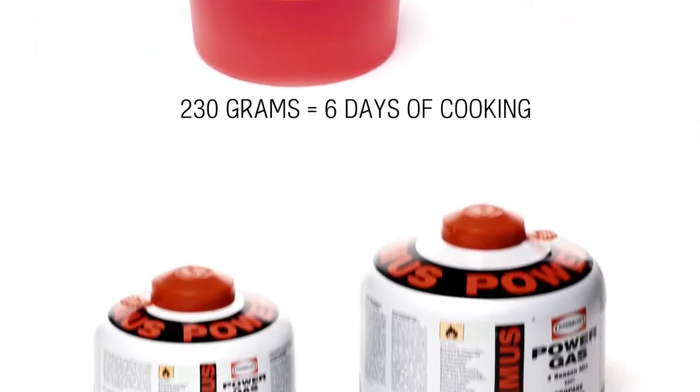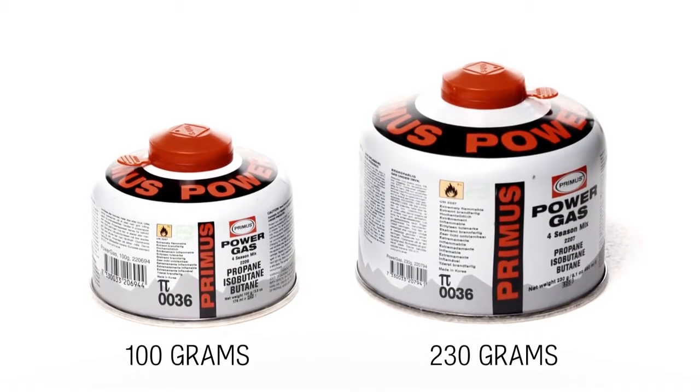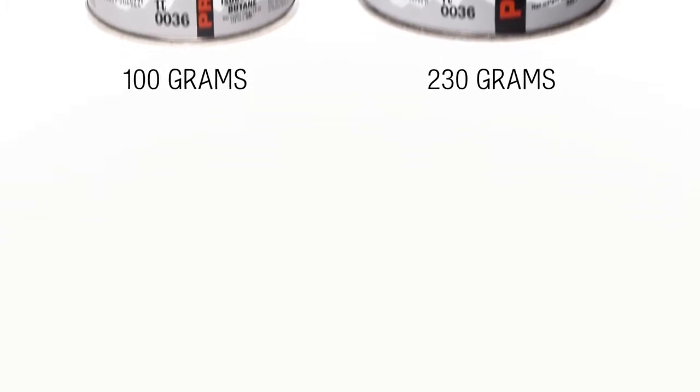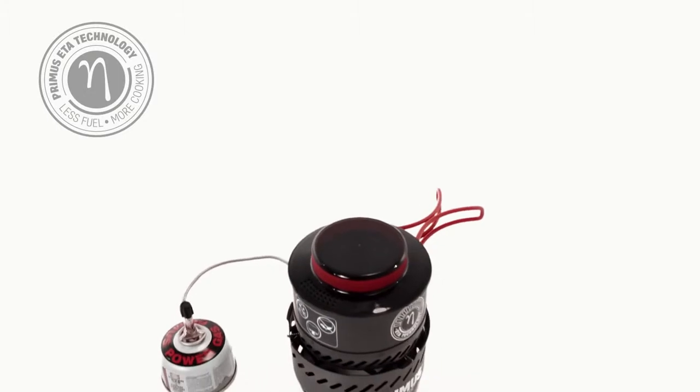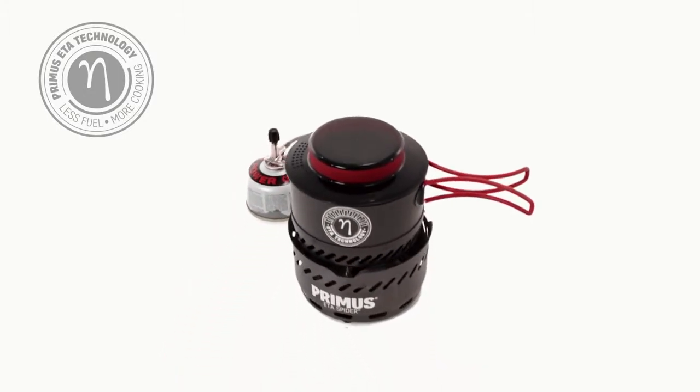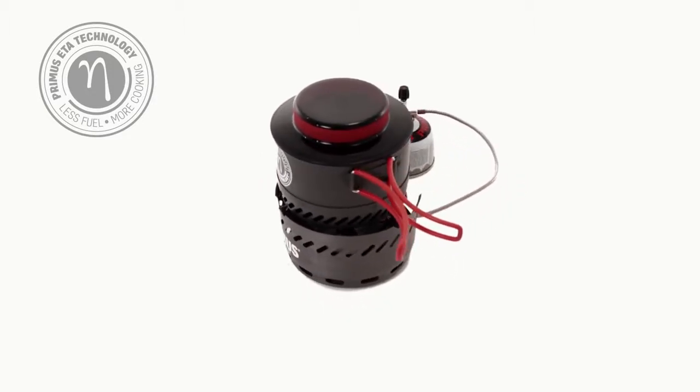A 230g LP gas canister will last for roughly two hours of cooking, depending on altitude, weather conditions and temperature of the water used. That translates to the cooking of every lunch and dinner, as well as the brewing of breakfast and afternoon coffee or tea for two persons during a six-day adventure. Twice the efficiency you'll get from a conventional stove.